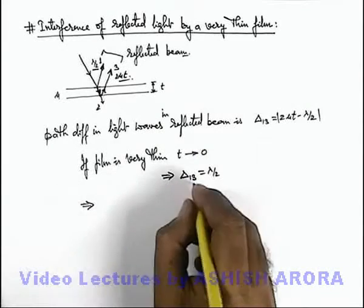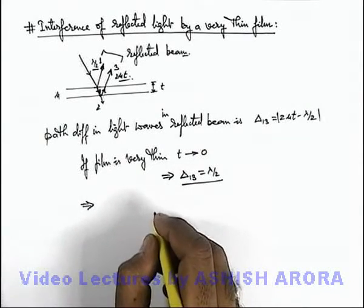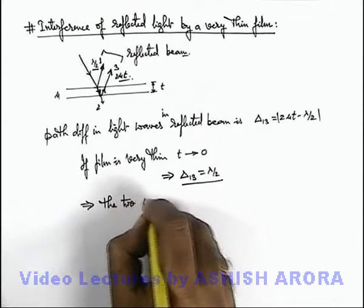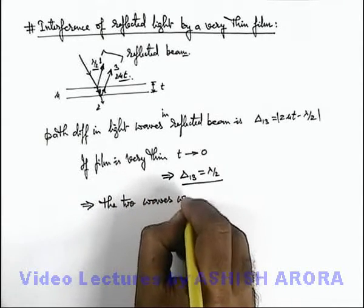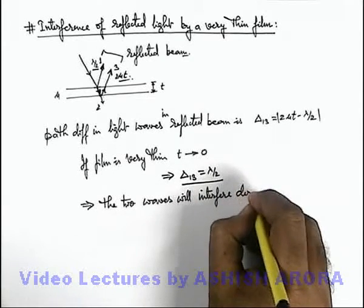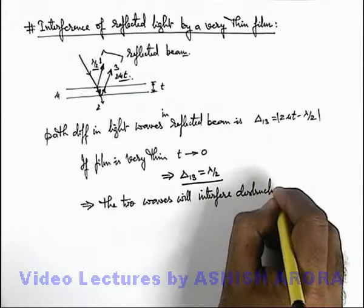This implies if the path difference is lambda by 2, then the two waves will interfere destructively.